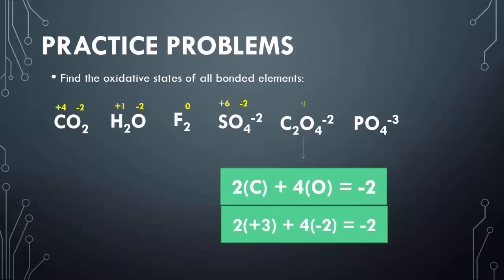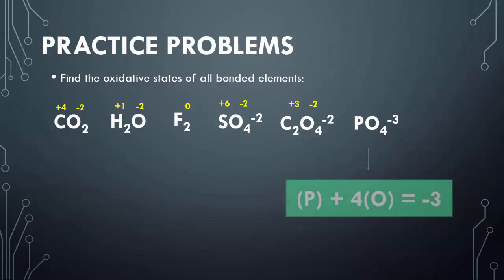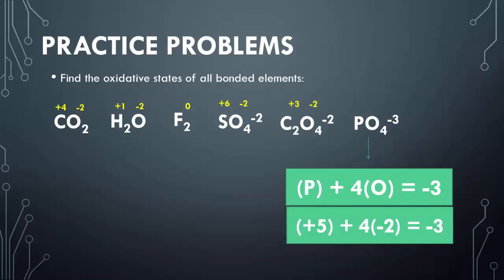Always start with the element that you know for sure, because it only has one selected oxidation state — most of the time that's oxygen, or even hydrogen, because hydrogen is usually just positive one. Start with the elements you definitely know, then continue with math. Looking at the phosphate ion, you have one phosphorus and four oxygens. Plug in the charge for oxygen: something plus negative eight is negative three, so phosphorus has to have a positive five charge.